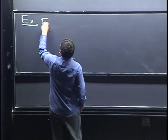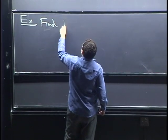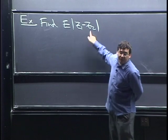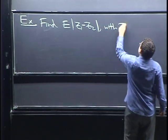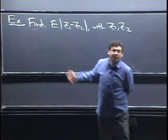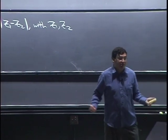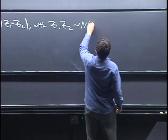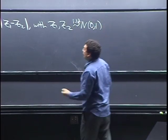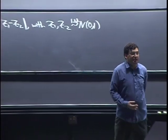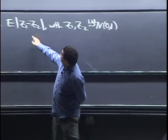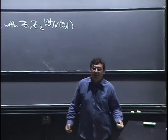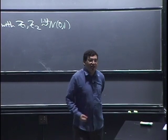We want to find the expected value of |Z1 - Z2|, where Z1 and Z2 are IID standard normal. Last time we did this for uniform using the 2D version of Lotus — completely analogous to Lotus, except we had a double integral instead of a single integral. So we could write down the 2D Lotus here and try to do that integral. Because they're IID, the joint PDF is just the product of the two marginal PDFs. We could probably get it with some effort, but that's not a good way to do this problem.